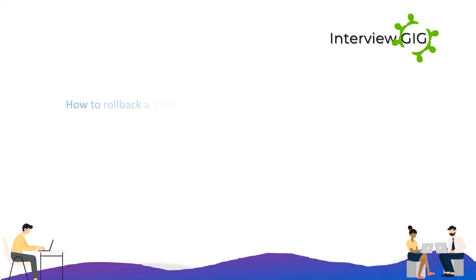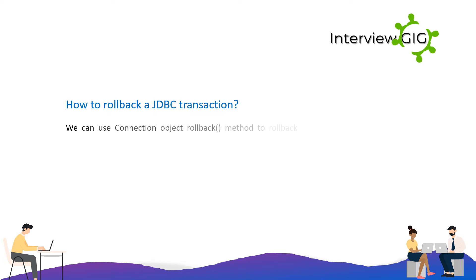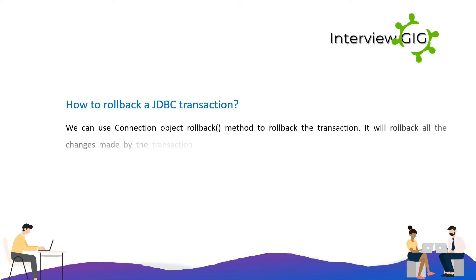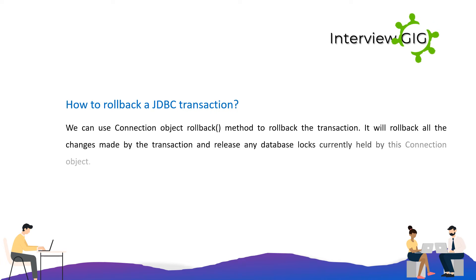How to roll back a JDBC transaction? We can use the connection object's rollback() method to roll back the transaction. It will roll back all the changes made by the transaction and release any database locks currently held by this connection object.